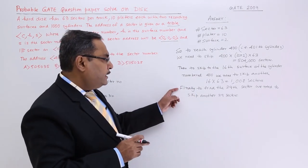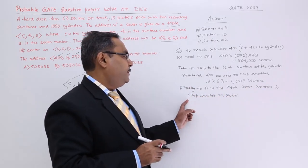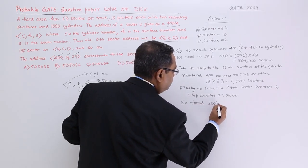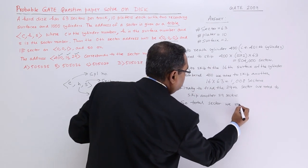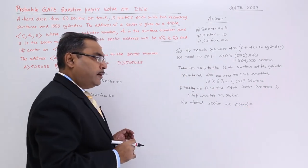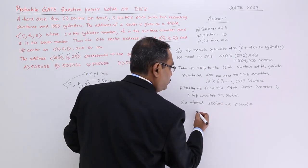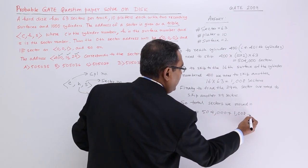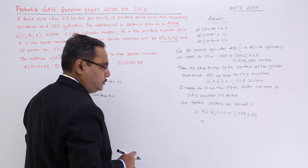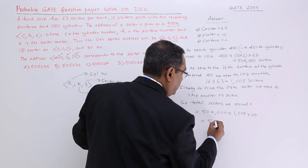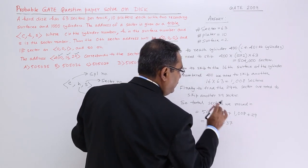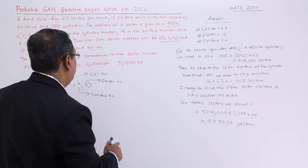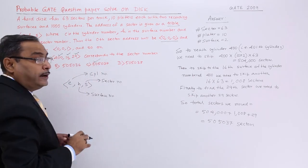Finally, to find the 29th sector, we add another 29 sectors. So the total number of sectors traversed is 504,630 + 1008 + 29 = 505,667 sectors — wait, as stated in the video: 504 [calculated value] + 1008 + 29 = 505,037 sectors. This is the answer.